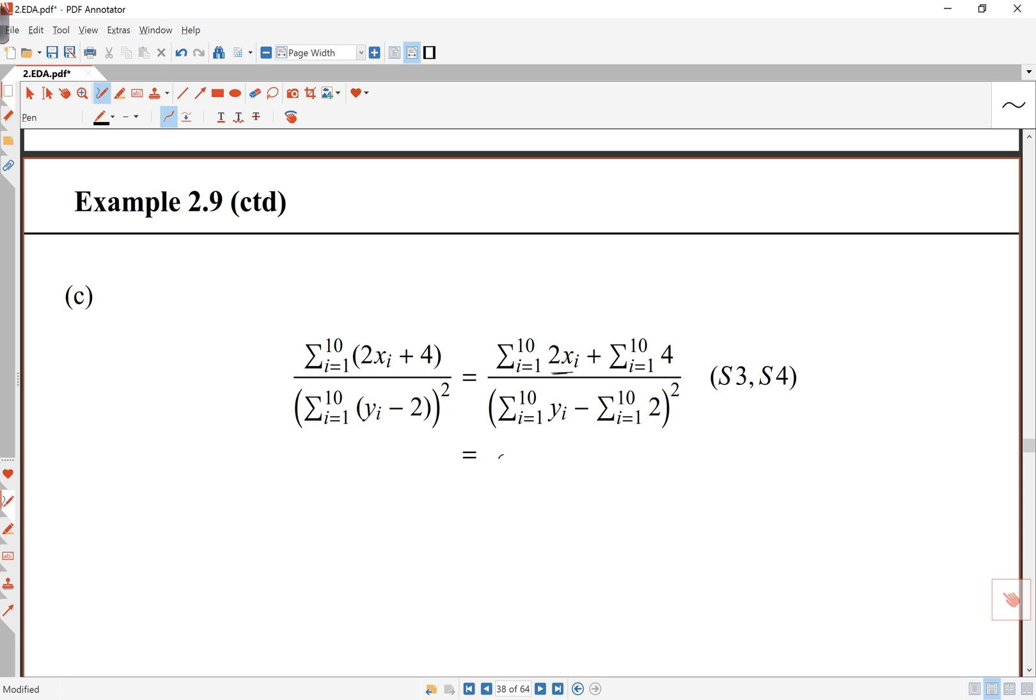Now the first one here, the 2 comes outside, and I get the sum of x's, and then the sum of 1 to 10 of 4, my rule says is just 10 times 4.